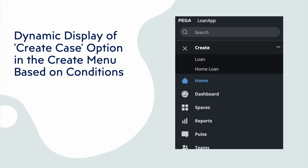In this screenshot you can see we have two case types: Home and Home Loan. What we usually want is that some set of users will create Loan and some set of users will create Home Loan. You can restrict based on set of users using privilege, role, or access group.